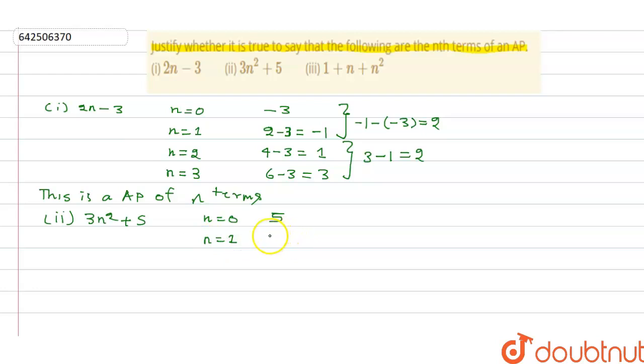This is an AP of n terms. Second one is 3n squared plus 5. For n equals 0, we get 5. For n equals 1, we get 8. For n equals 2, we get 3 into n squared, it means 4, so 12 plus 5, which is 17. n equals 3, we get 27 plus 5 is 32.